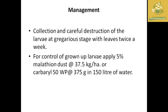Management for the cabbage head borer includes collection and destruction of larvae at the gregarious stage by checking the crop twice a week. For grown larvae, apply 5% malathion dust at 37.5 kg per hectare or carbaryl 50 WP at 375 grams in 150 liters of water per hectare.